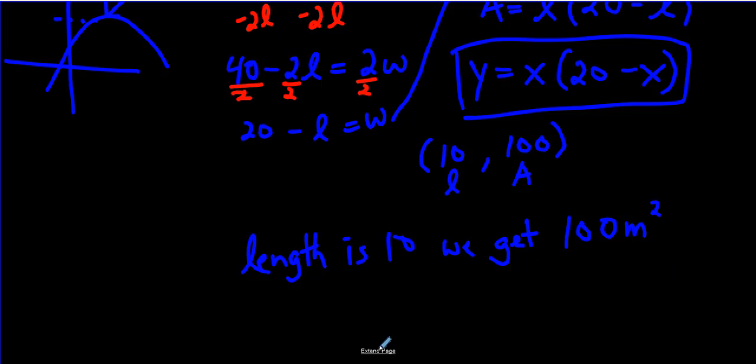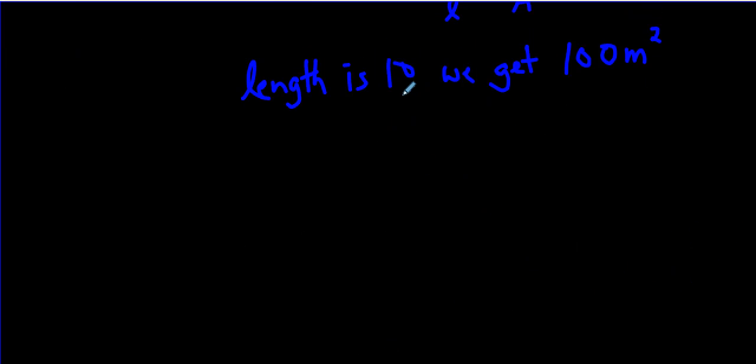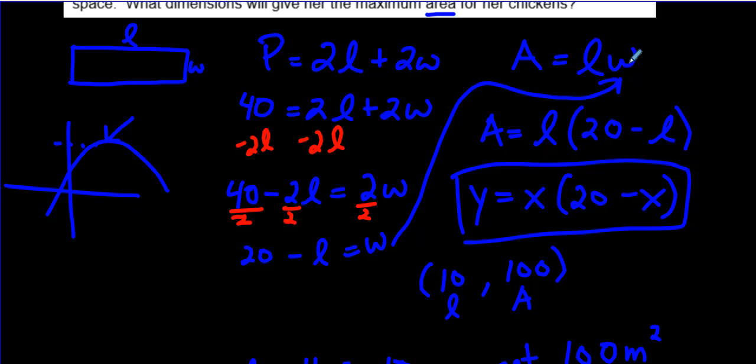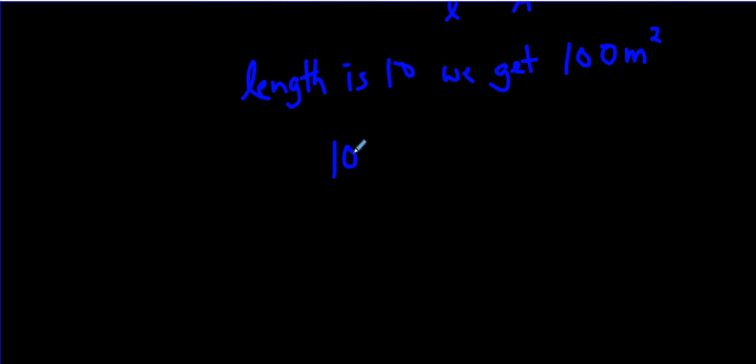We can see from this answer that Desmos gave us that when the length is 10, we get a maximum area. We get 100 meters. Because it's an area, we get 100 meters squared whenever the length is 10. Now the question said, what dimensions will give her the maximum area? When you talk about dimensions, we don't want to just talk about the length. We need to talk about the length and the width.